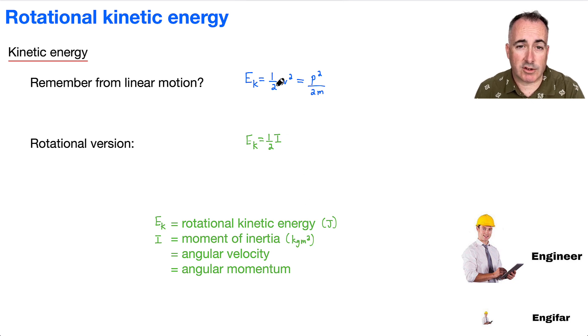I can't forget there's v squared here. The rotational version of v is omega. So it's omega squared. Omega is the angular velocity, measured in radians per second.